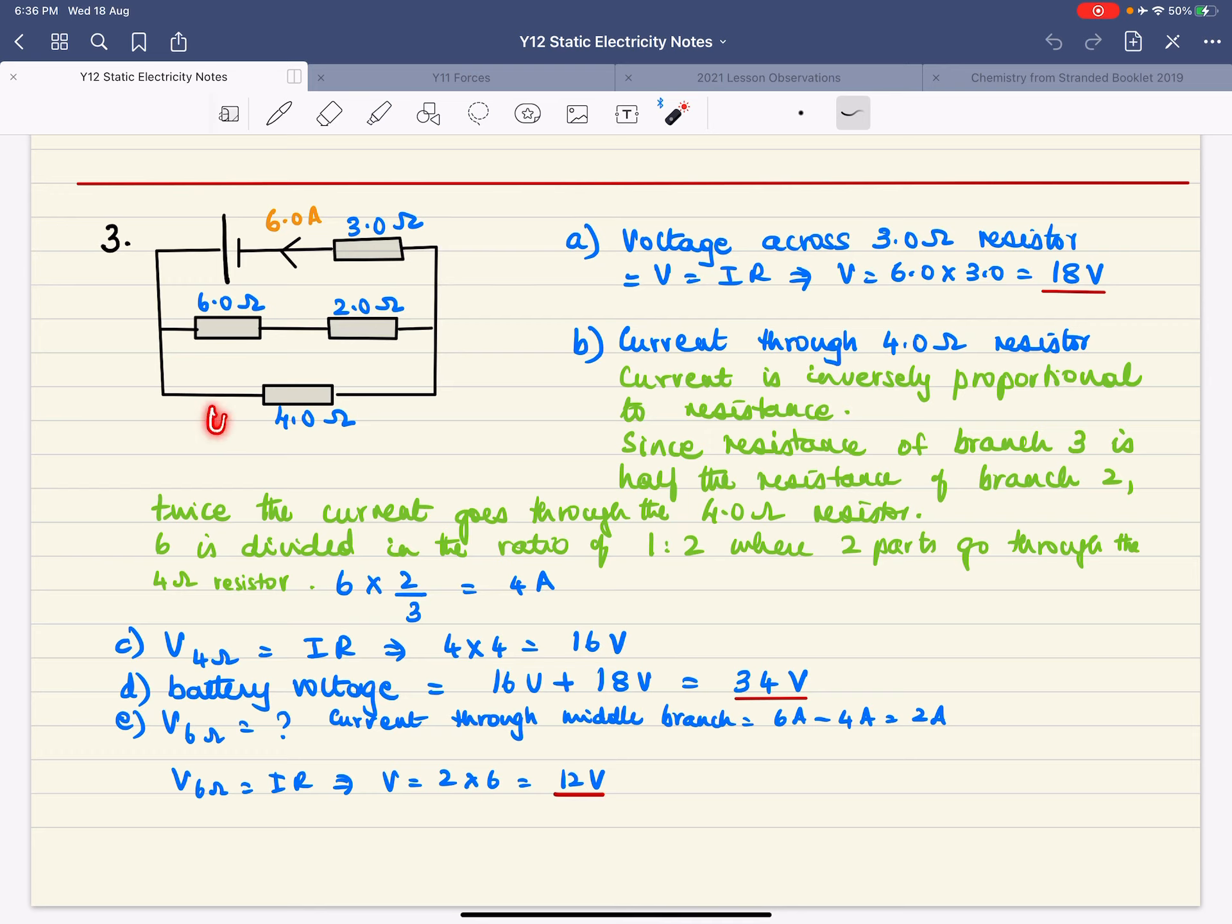And then what's the voltage across the bottom branch? Voltage is current times resistance, 4 times 4 is 16 volts.